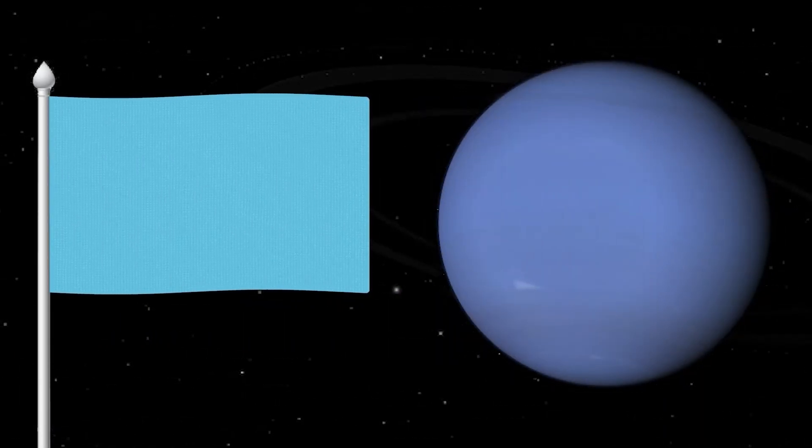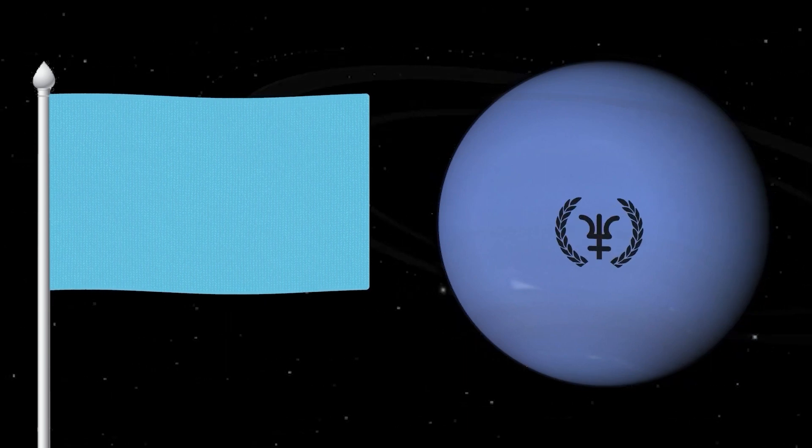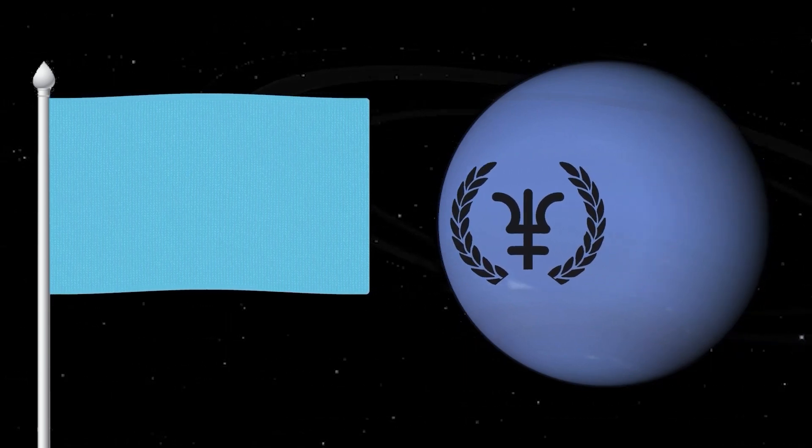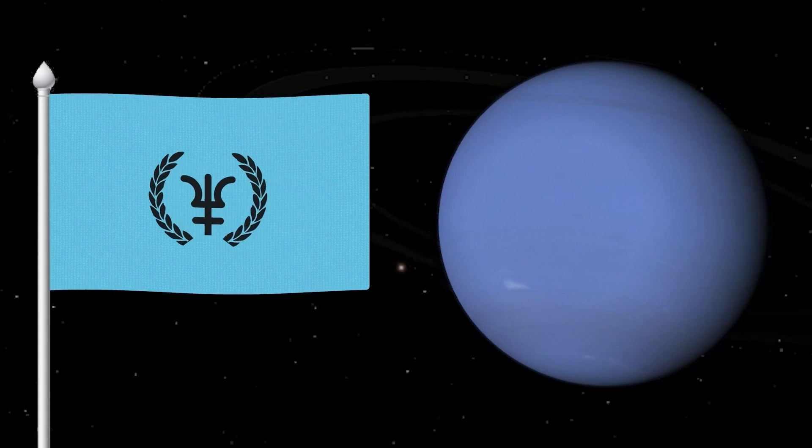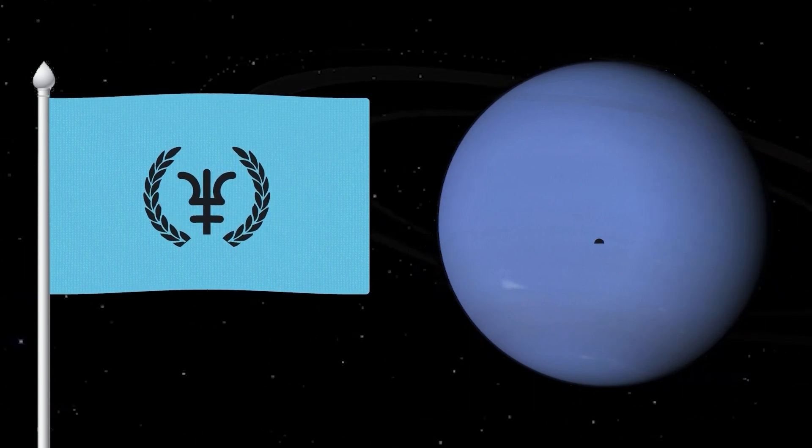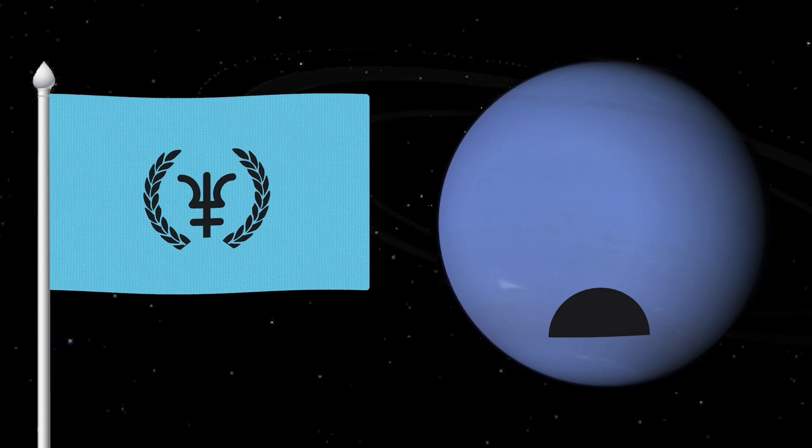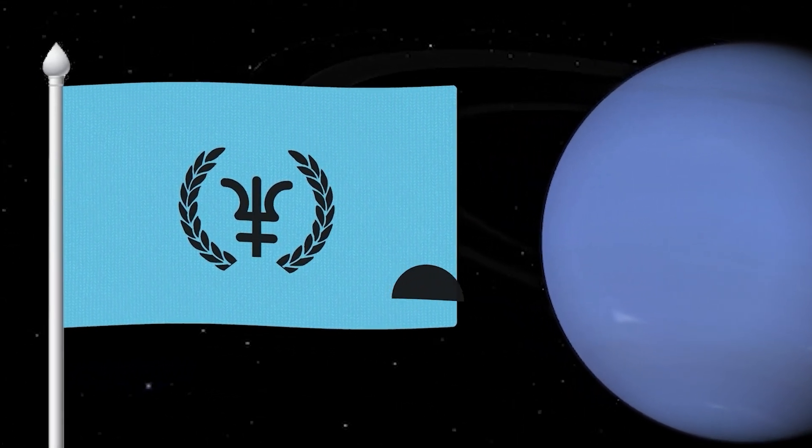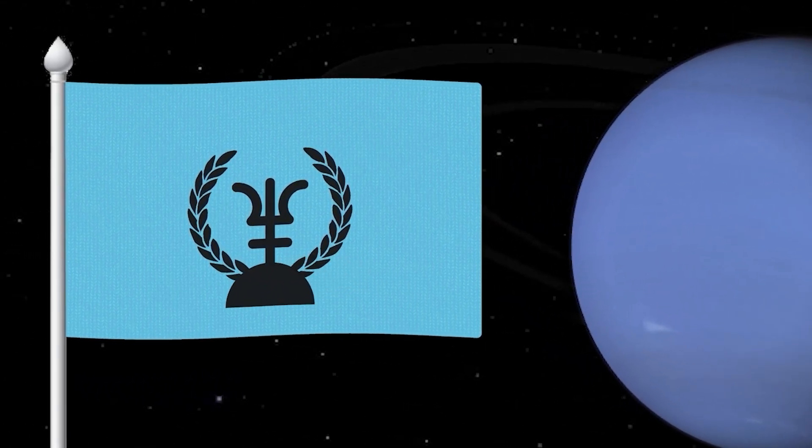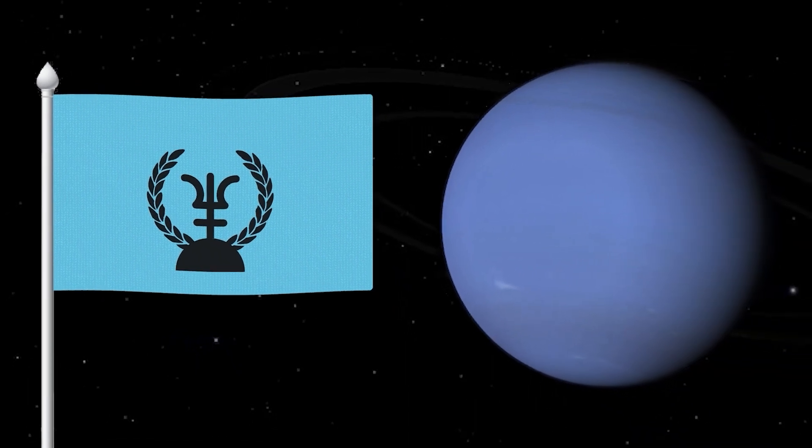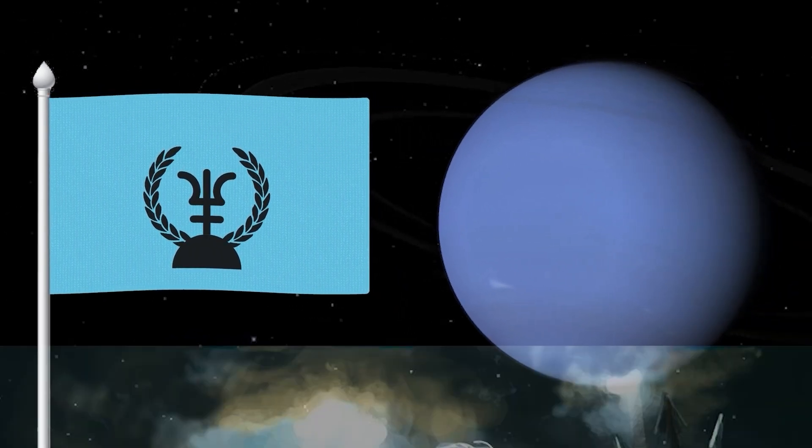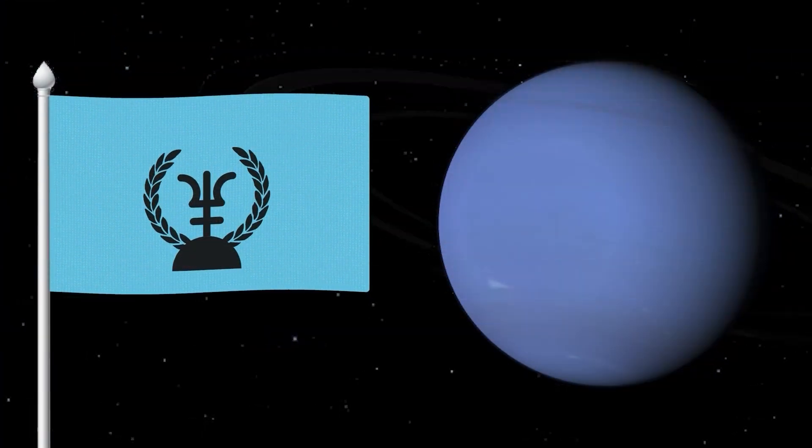The flag of Neptune will be blue and on the flag there will be leaves of laurel and a trident that will serve as a background to Neptune. And black color will speak of a small quantity of sunlight reaching Neptune. And the black semicircle on which the trident stands will speak of a large dark spot located on Neptune. The flag completely conveys both the story of the god and the history of the planet.